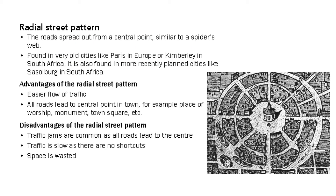The radial street pattern is where the roads all go in towards a central monument or place like a church or town square. The advantage is easy flow of traffic. Disadvantages are that space is wasted on this pattern.